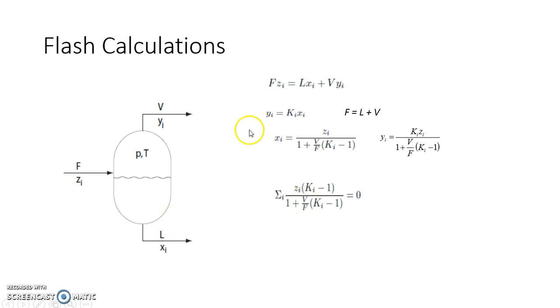These equations can be used in combination with DePriester chart to solve for either, given T, P, F, Z you can find V or L. The other possibility is given either P or T, F, Z and V, you find the remaining P or T or L. Both the kind of problems can be solved with the help of DePriester chart and this equation.